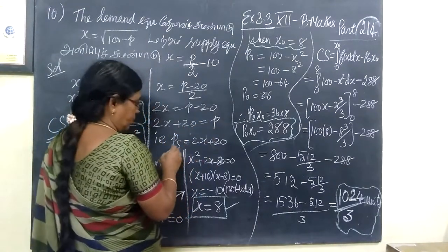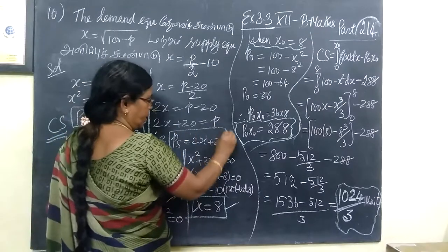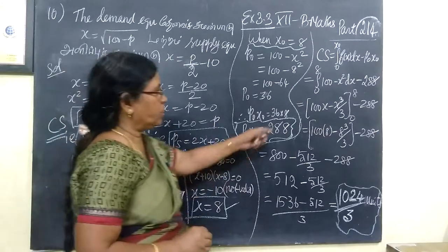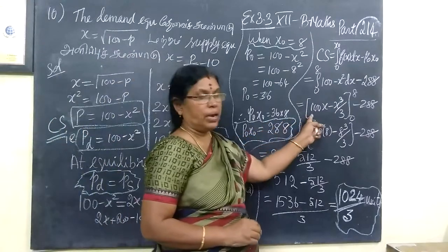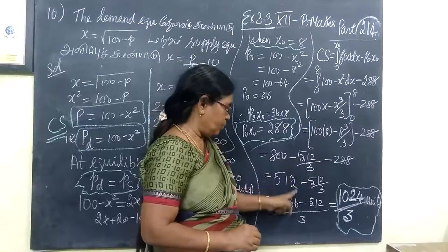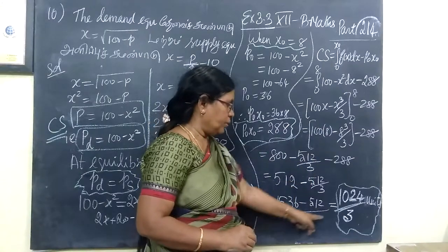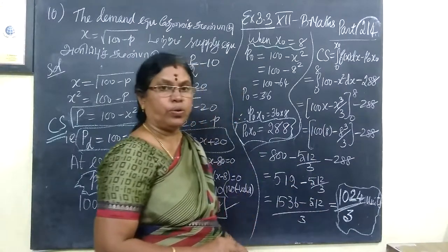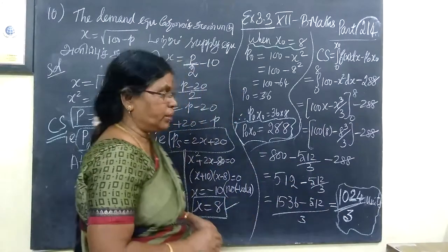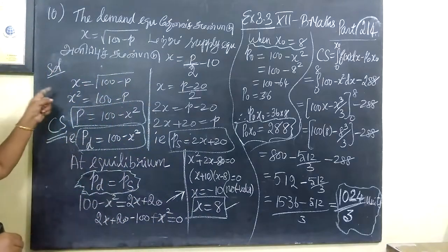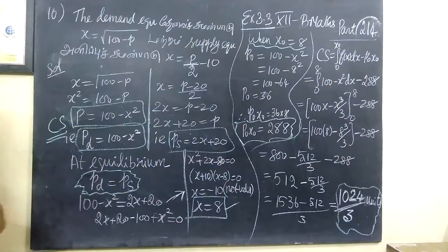Producer surplus in the function. So, this is the direction of the function. You are getting the answer: 1024 by 3 units. And one more we have to do — producer surplus in the function.